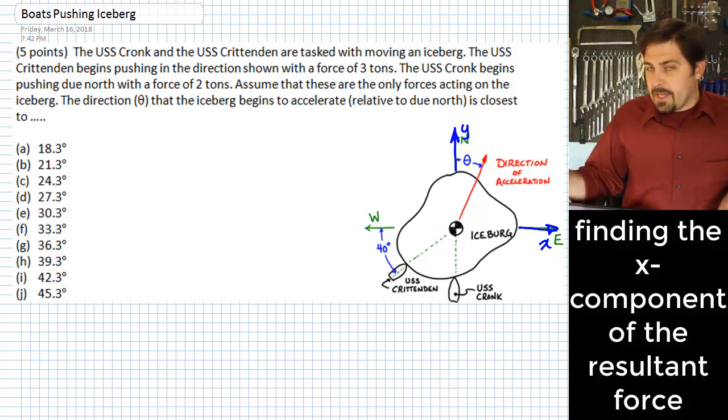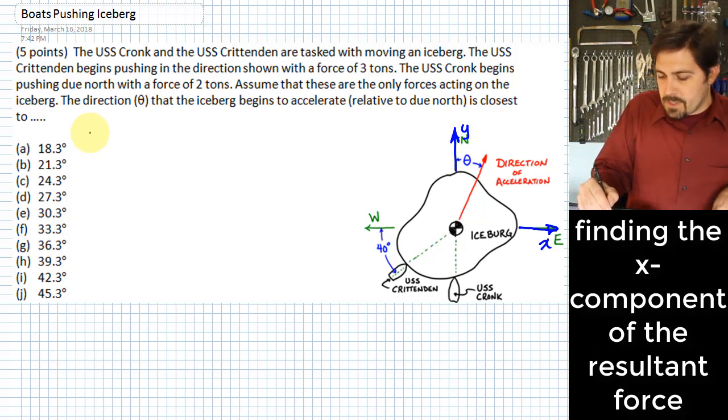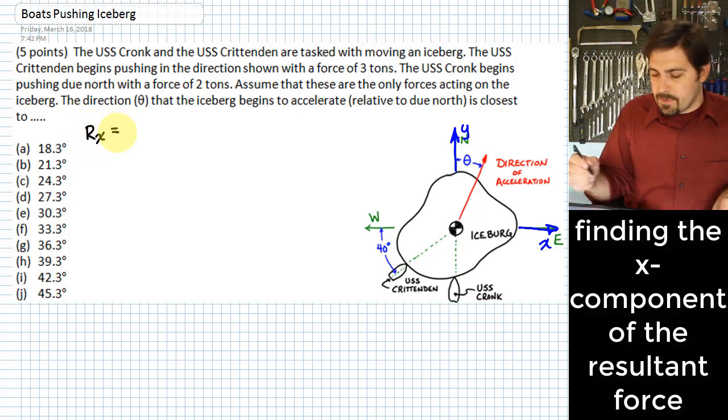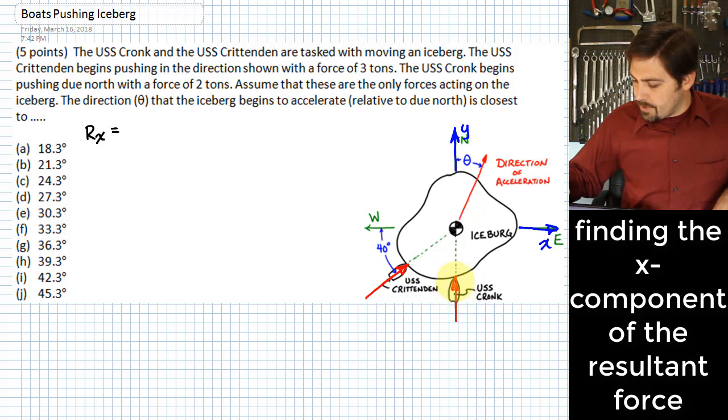Next, we want to evaluate all the different applied forces that create x components and sum those all up into something I will call r sub x, being the x component of the resultant. As I look at this, the forces that we have here—we have one coming from the USS Crittenden that goes like this, and we have one coming from the USS Cronk that goes like this.